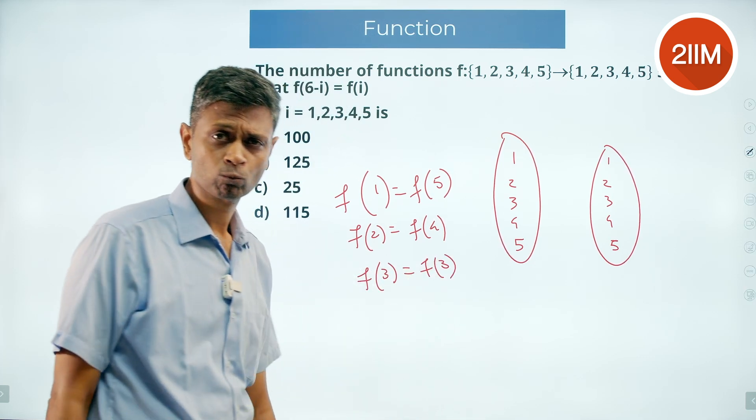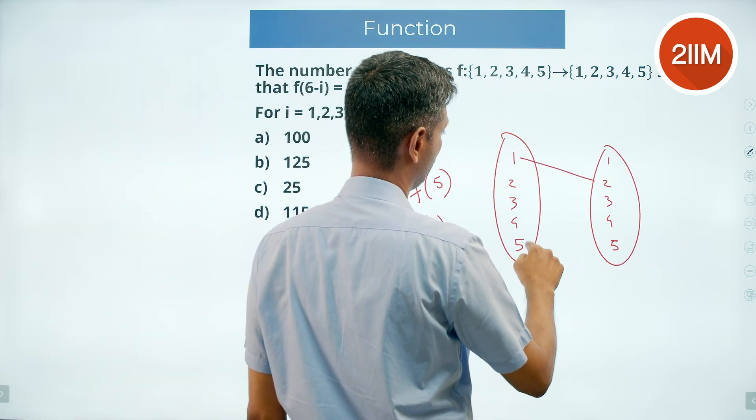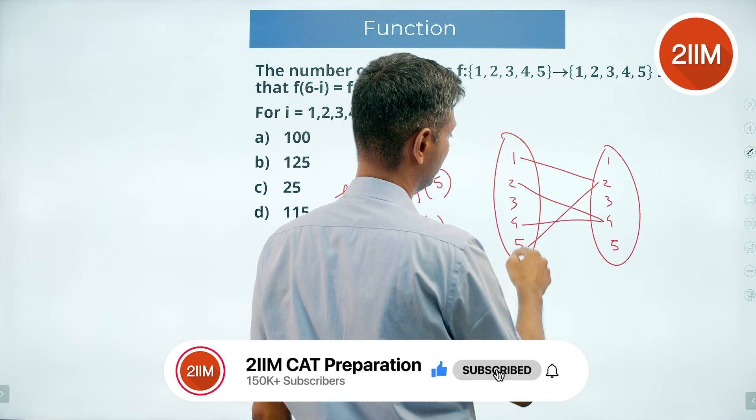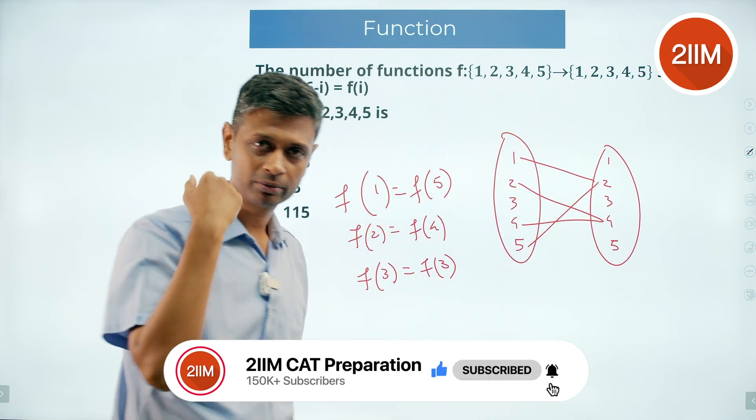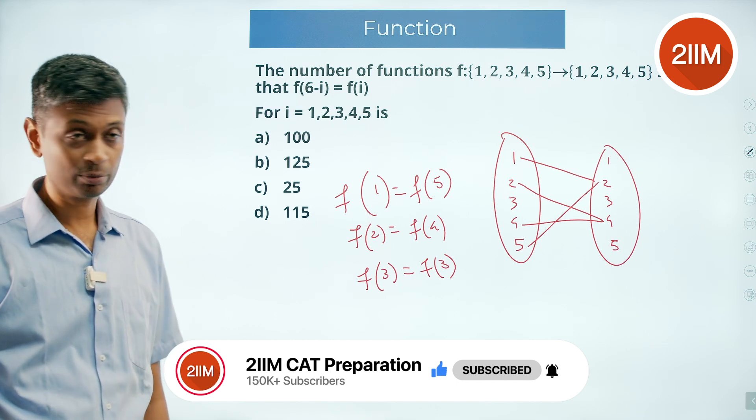anything. 1 and 5 point to the same thing. 1 and 5 point to the same thing. 2 and 4 point to the same thing. 3 points to whatever it wants. Beautiful question. How many such functions are possible?